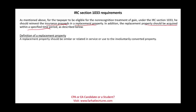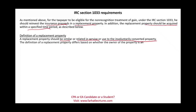What is the definition of replacement property? A replacement property should be similar or related in service or use to the involuntarily converted property. Section 1033 is more restrictive than Section 1031. In Section 1031, as long as it's real property they're very flexible. In Section 1033, it has to be similar or related in service. The definition of replacement property differs based on whether the owner is an owner-investor or an owner-user. There are also different rules for property condemnation.